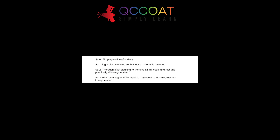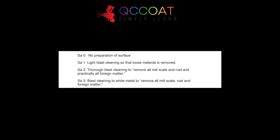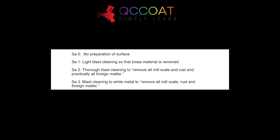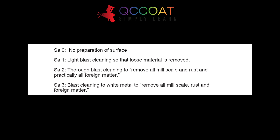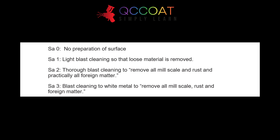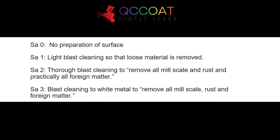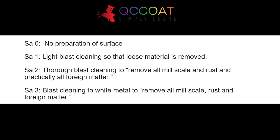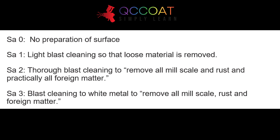Surfaces cleaned by abrasive blasting were described as: SA0, no preparation of surface; SA1, light blast cleaning so that loose material is removed; SA2, thorough blast cleaning to remove all mill scale and rust and practically all foreign matter; SA3, blast cleaning to white metal to remove all mill scale, rust, and foreign matter.